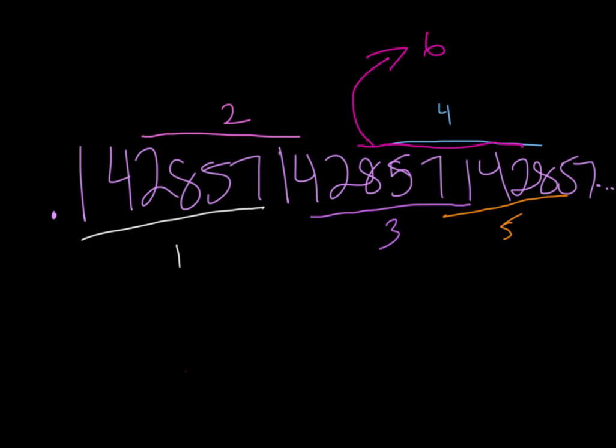So again, 5/7 would be 0. Then, the 5th lowest number is 7, right? So, 7, 1, 4, 2, 8, 5.